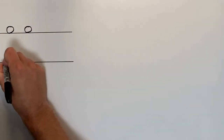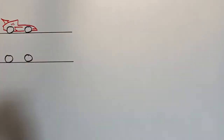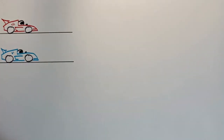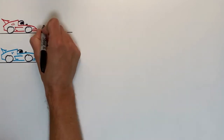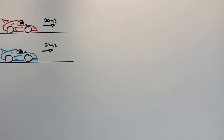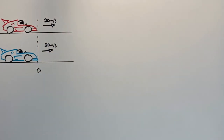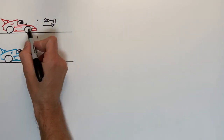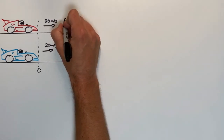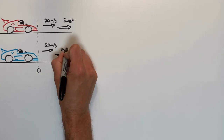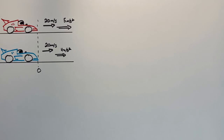We're going to start with two cars driving down the road side by side. Both cars are initially traveling at 20 meters per second. At time zero and position zero, both cars start to accelerate forward. The red car accelerates at 5 meters per second squared, while the blue car accelerates at only 4 meters per second squared. We're going to solve for the distance between the two cars after 10 seconds.